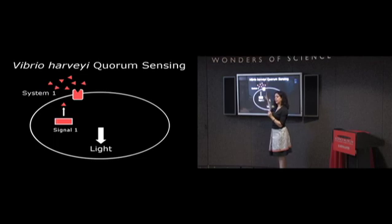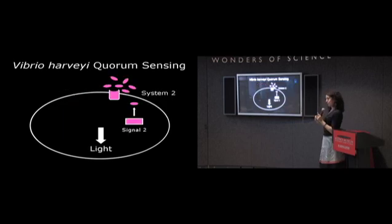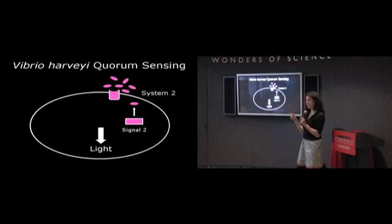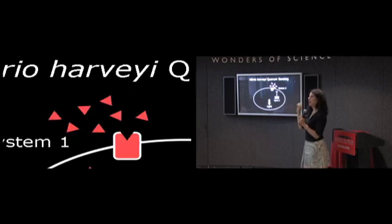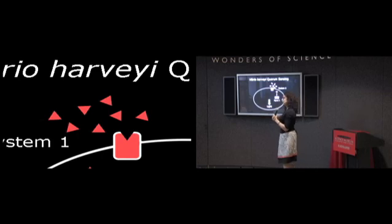We put those liquids on Vibrio harveyi and nothing happened. We could never find another species that made a molecule that turned on light through this system. That should make sense because these systems are species specific. The first language, the red triangles, is the language of intra-species communication.